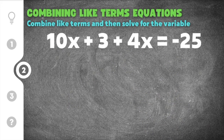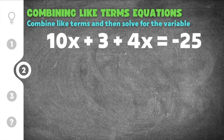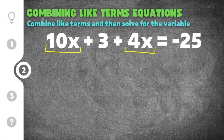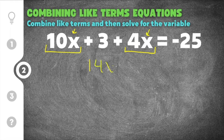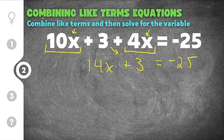Jumping down to problem number two: 10x plus 3 plus 4x equals negative 25. Again, we combine like terms on the same side of the equal sign. In this case, 10x and 4x are like terms because they have the same variable, so they get added together: 10 plus 4 gives 14x. The plus 3 just gets brought down, and equals negative 25. Now we have 14x plus 3 equals negative 25.